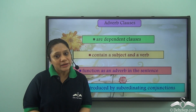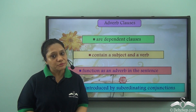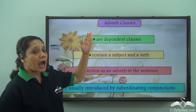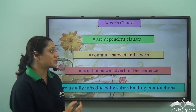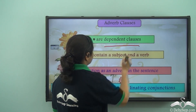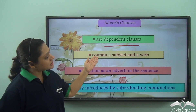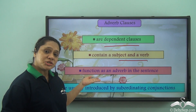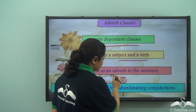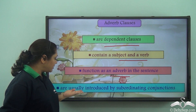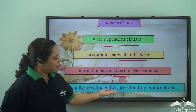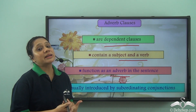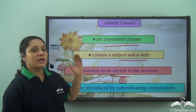We have already learnt about adverb clauses. Adverb clauses are dependent clauses. They contain a subject and a verb, function as an adverb in the sentence, and are usually introduced by subordinating conjunctions. Today we will continue learning about adverb clauses.